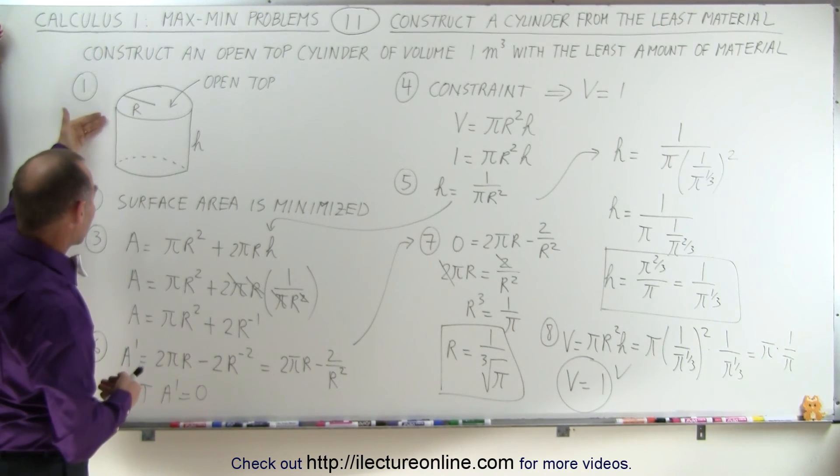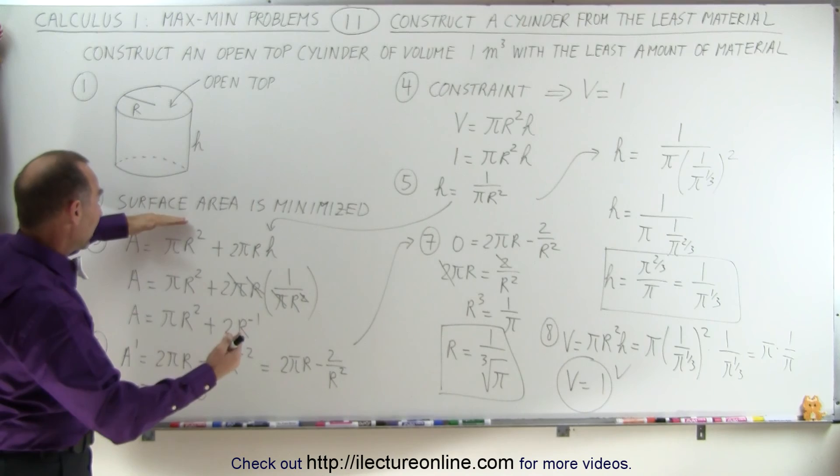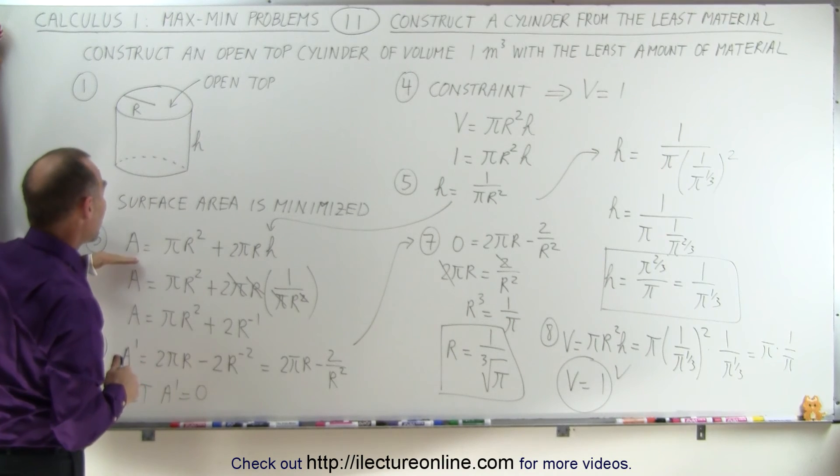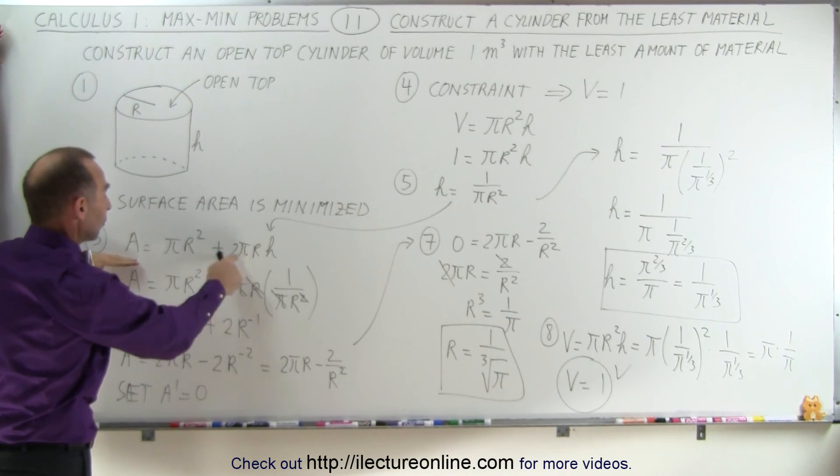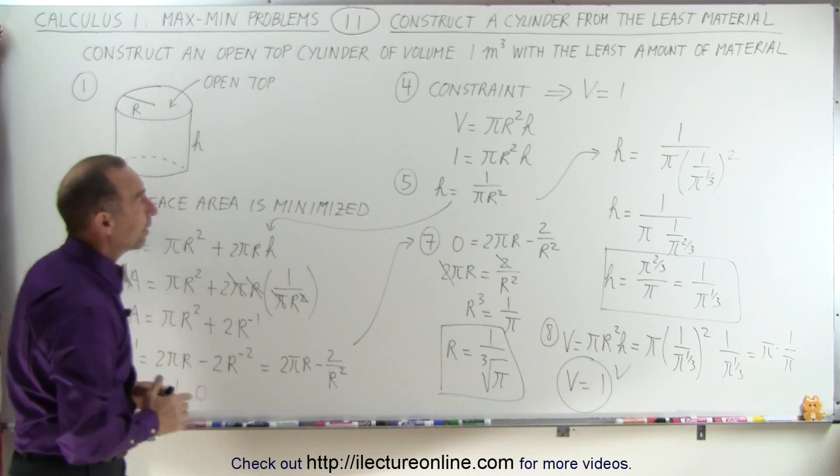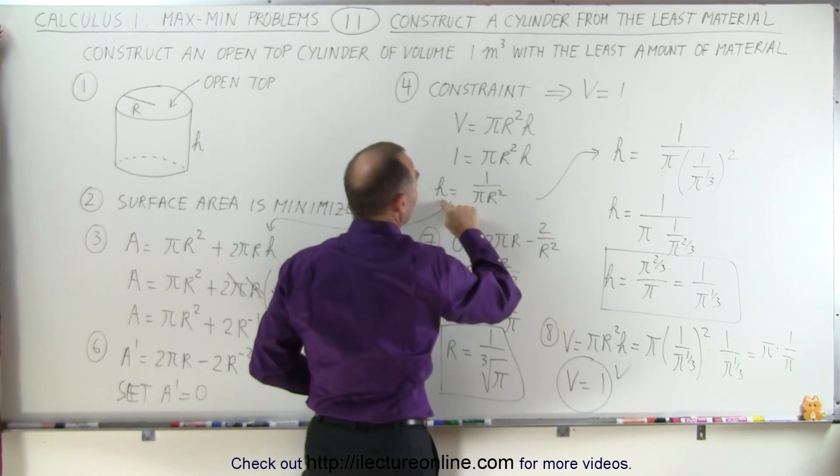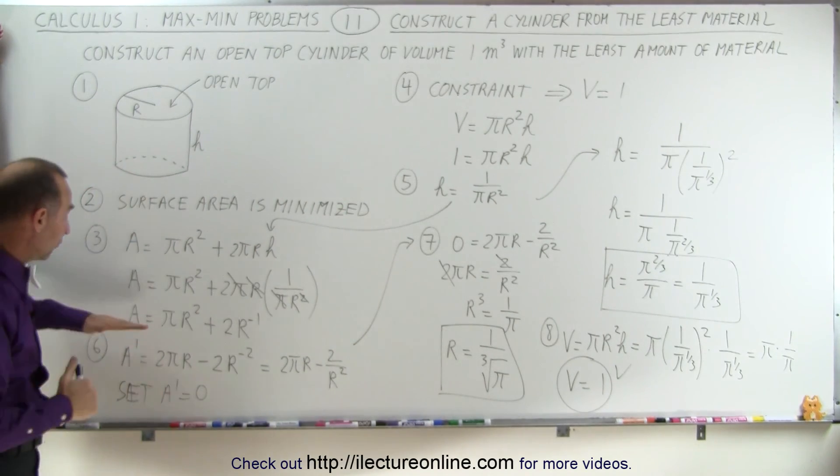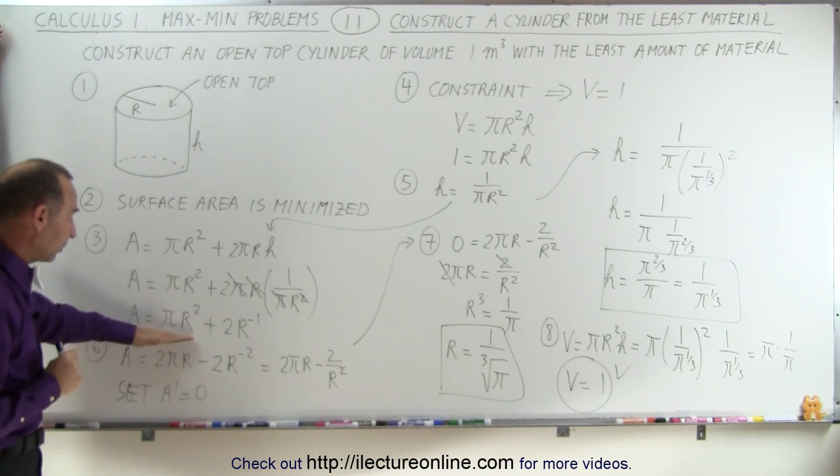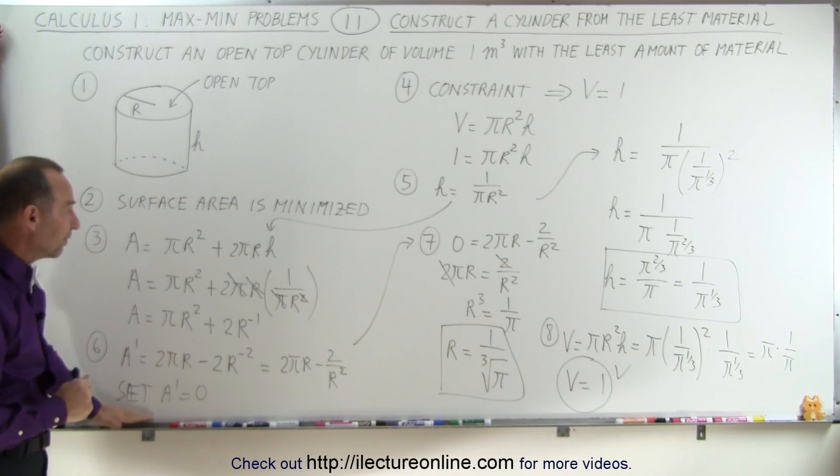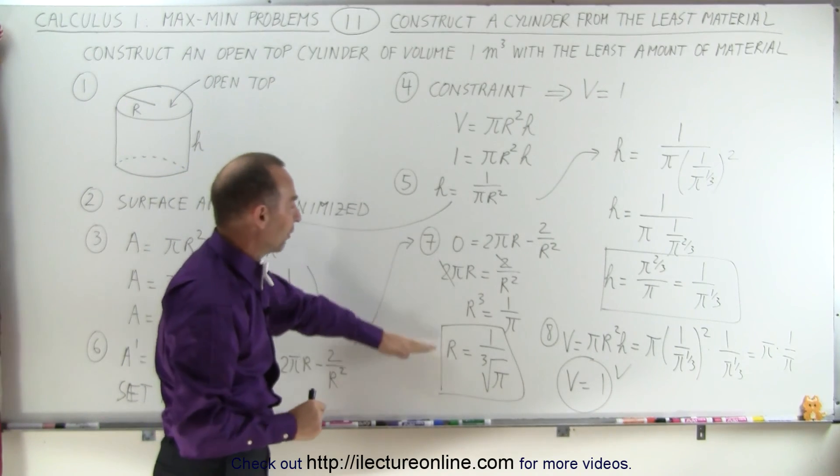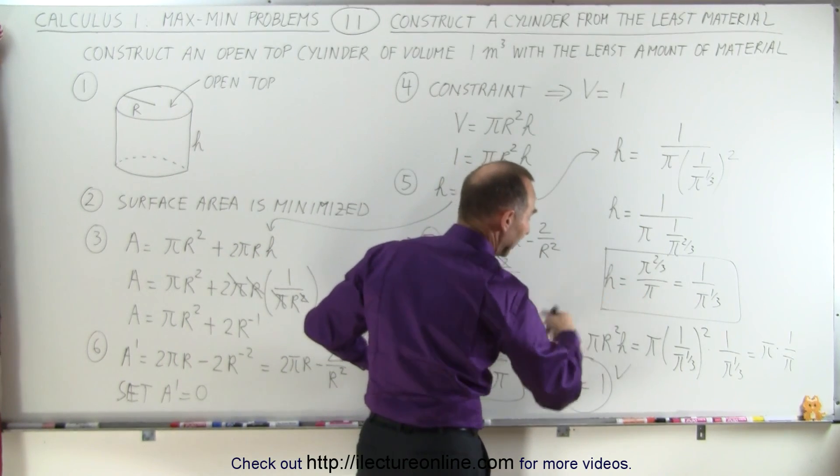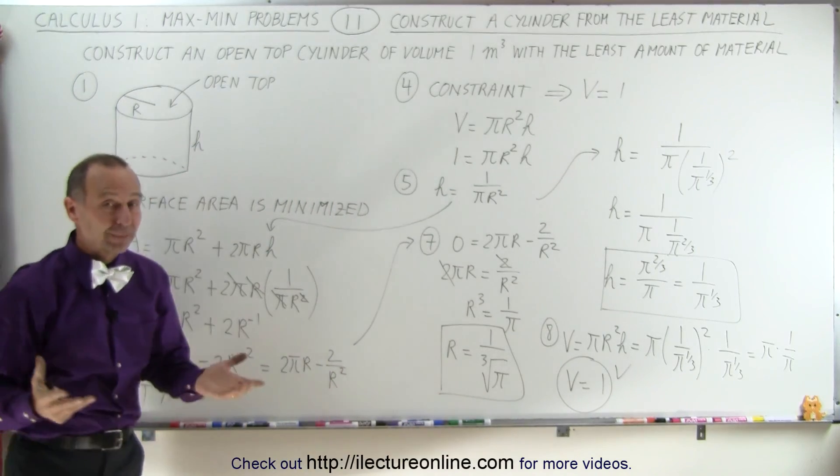Again, we follow the steps. Draw a diagram, determine what's being maximized or minimized. In this case, the material is being minimized, which means the surface area is being minimized. We write an equation in terms of the surface area in terms of both variables. We then find the constraint, which allows us to solve for one of the variables in terms of the other, which allows us to eliminate one of the two variables. We now have an equation for the area with just one variable. We take the derivative, we set the derivative equal to 0, and then we solve for the unknown variable. Once we have the unknown variable, we plug into our constraint to find the other unknown variable, and then we check to make sure we did it correctly. And that's how it's done.